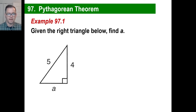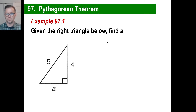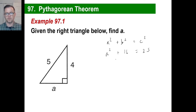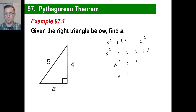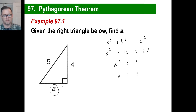Here is a first example. This is a very famous right triangle and they're asking us to find A. Using the Pythagorean theorem: A squared plus B squared equals C squared. B squared would be four times four, which is 16. C squared would be five times five, which is 25. So A squared equals 25 minus 16, which is nine. We have two possible answers — three or negative three — but we throw out negative three since there's no negative side length. So A is three. This is a very common right triangle called a 3-4-5 triangle.